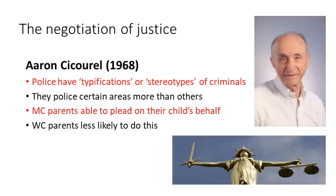This brings us to the work of Aaron Cicourel, who talked about the negotiation of justice. Police have in their mind typifications — stereotypes of what they think a criminal looks like and how a criminal behaves. As a result, they police certain areas in our society more than others, thinking that's where they're going to find criminals. When inevitably young people, working class individuals, or Black, Asian, and minority ethnic individuals are picked up and taken to a police station, an interesting outcome occurs. If that child is middle class, their parents will often turn up to the police station and plead on their behalf, and will be able to negotiate their child out of justice.